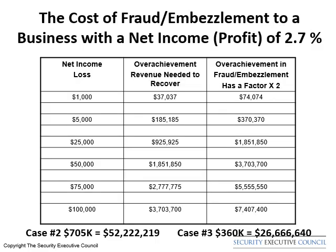This spreadsheet will demonstrate the two cases named at the bottom and will further help explain the cost recovery matrix in more detail. The header on this slide gets right to the point — this slide focuses on the cost of fraud and embezzlement to a business with a net income or profit of 2.7%. Below the header are three columns. The first column is titled Net Income Loss. The second, or middle column, is titled Overachievement Revenue Needed to Recover. And the third, or far right column, is titled Overachievement in Fraud Embezzlement, and it has a factor of two times.